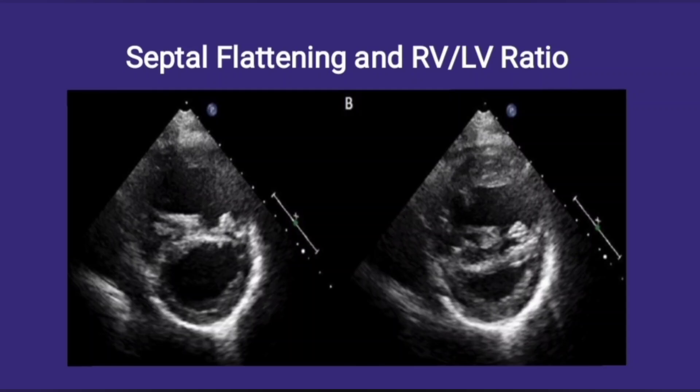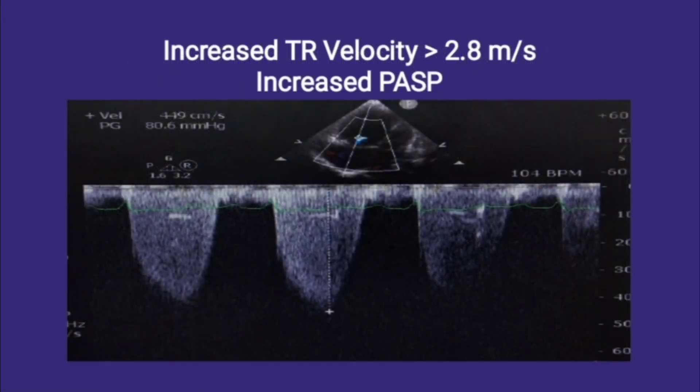The next parameter is septal flattening and RV/LV ratio, which are interrelated. Septal flattening is defined as the paradoxical motion of the interventricular septum in systole and diastole, also known as D-shaped LV cavity. It is a sign of right heart pressure overload. An RV/LV ratio of more than one implies septal flattening. Our next parameter is tricuspid regurgitation, which will also help us assess the pulmonary artery systolic pressure.